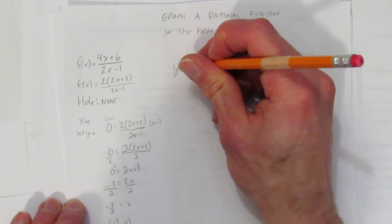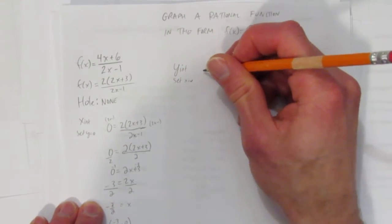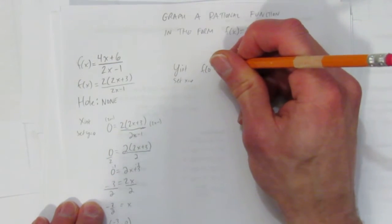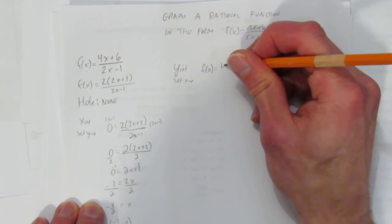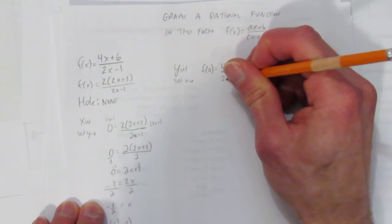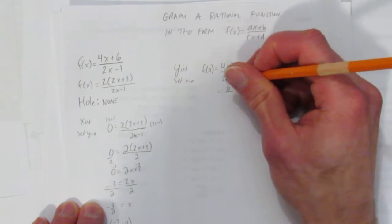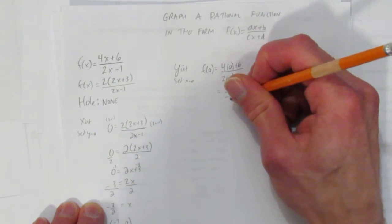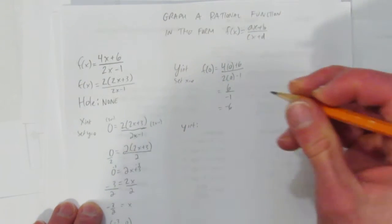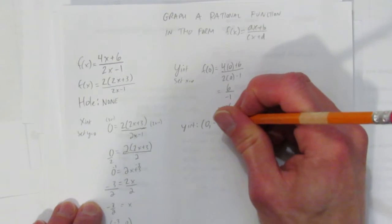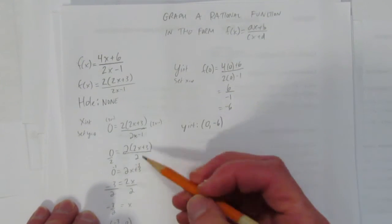Got my x-intercept. How about my y-intercept? For the y-intercept, set x=0. So I'll say f(0) equals, you can use either equation, I'll use this one. 4(0)+6 over 2(0)-1. 4 times 0 is 0 plus 6 is 6. 2 times 0 is 0 minus 1 is -1. So you get -6. In other words, the y-intercept is at x=0, y=-6.